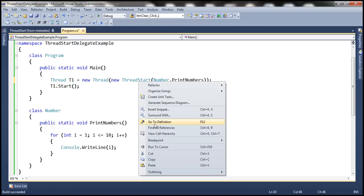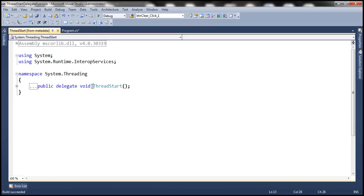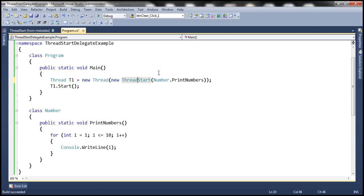Now if you look at this delegate syntax, notice that it returns void and doesn't take any parameters, and the function to which it is pointing, that is PrintNumbers, look at its signature, it returns void and doesn't take any parameters. So the signature of this function matches the signature of this delegate. That's why delegates are type-safe function pointers.